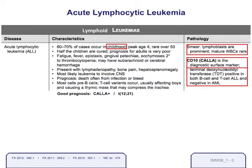There's an important cell marker that tells you these B-cells and T-cells making up the lymphoblastic leukemia are immature, and that marker is TdT — terminal deoxynucleotidyl transferase. TdT is a marker present only on immature T-cells and B-cells. So if you take a bone marrow biopsy, find a ton of lymphoblasts, and they're TdT positive, you're dealing with ALL.